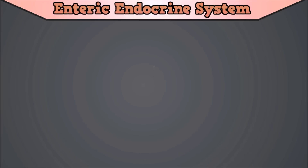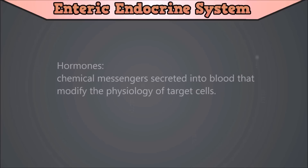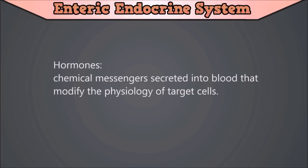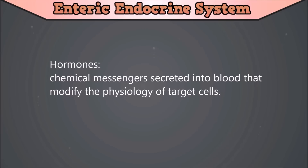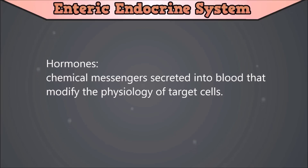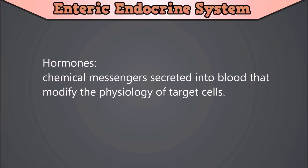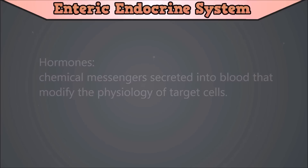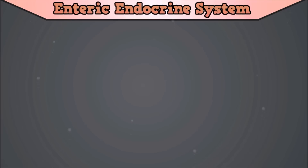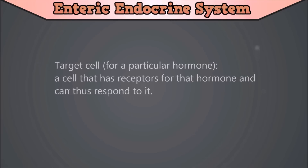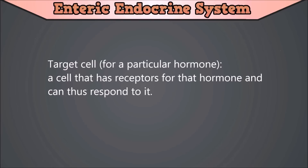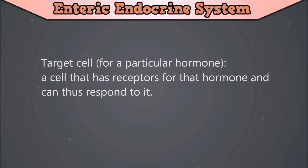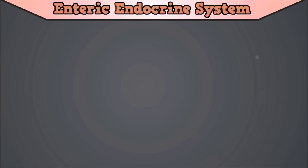For the purpose of a correct definition, hormones are chemical messengers secreted into blood that modify the physiology of target cells. So hormones are not secreted into the lumen of the gastrointestinal tract, but into the circulatory system, which will transport them to their destination. The definition of a target cell for a particular hormone is a cell that has receptors for that hormone and can thus respond to it. The endocrine cells within the gastrointestinal tract are referred to collectively as the enteric endocrine system.